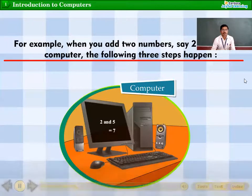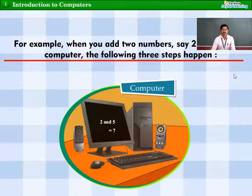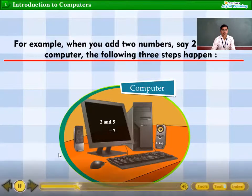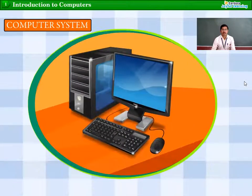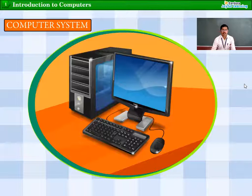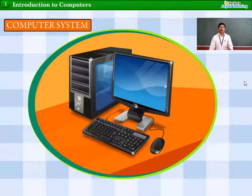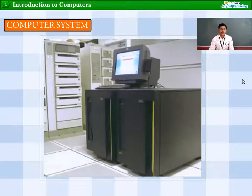In higher classes you have seen a computer with all the parts. Do you know that the computer is also called a system? A computer system can simply be defined as a machine that is used to generate information from data. A computer system has different parts that together make it work.